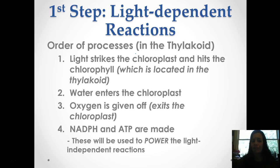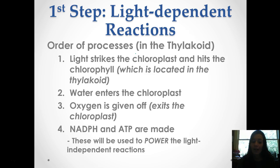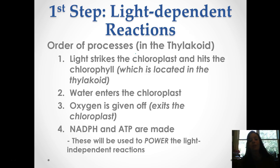So let's talk about the first step, the light dependent reactions. There's an order of processes that happens, and this happens in the thylakoid. Light is going to strike the chloroplast and hit the chlorophyll, which is located in the thylakoid. Water then enters the chloroplast, and then oxygen is given off where it exits. Oxygen is a byproduct — there tends to be a misconception that plants produce oxygen as their main product, but oxygen is just a byproduct of this process. Also during light dependent, NADPH and ATP are made, and these are going to help power the light independent reactions.